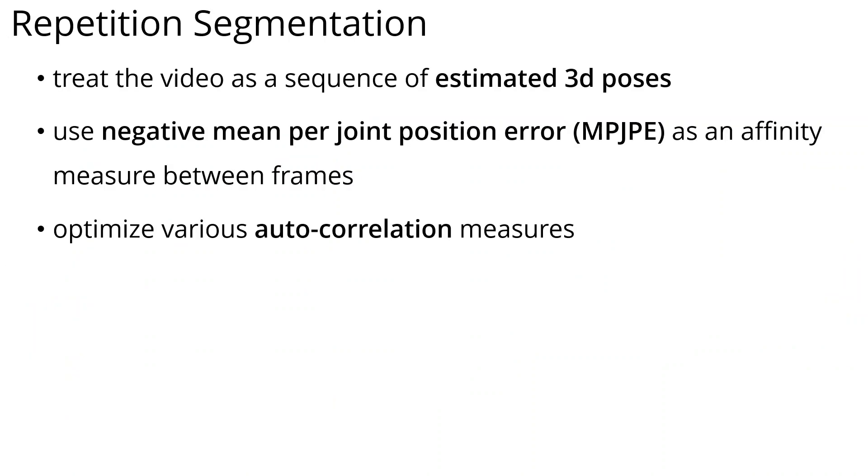We propose using estimated 3D poses to segment exercise repetitions. We use the negative mean per joint position error, MPIPE, as an affinity measure between frames, and optimize various autocorrelation measures.